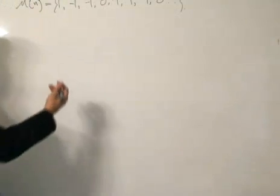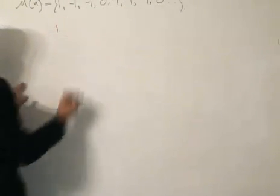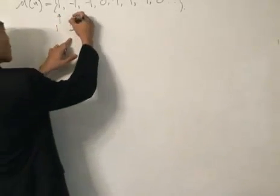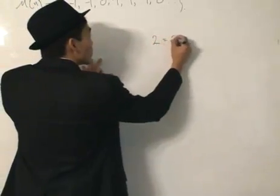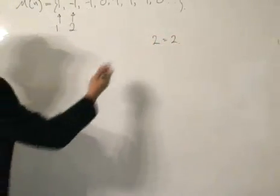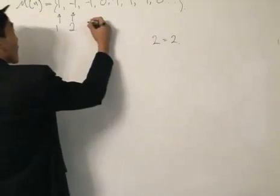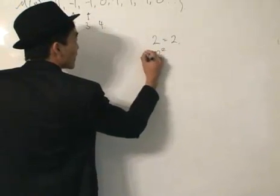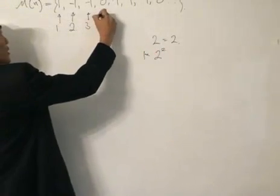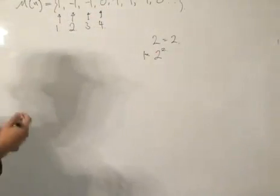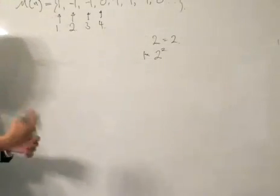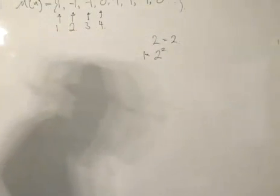What do I mean by that? We simply start with the number one — one goes into the plus one category. Then the number two goes into minus one, because two equals two, an odd number of distinct primes — only one of them. Three similarly goes into minus one. Then four, which is two squared, is a multiple of a square number, so it goes into zero.